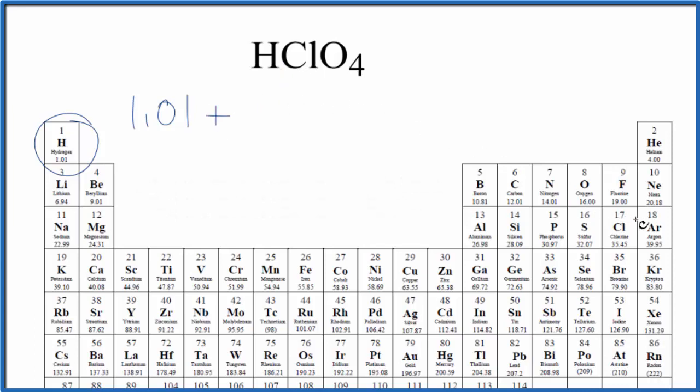Chlorine is 35.45 grams per mole. And again, we only have one chlorine atom. Then we add the oxygens. We have 16.00 grams per mole and four oxygens. So we multiply this times four.